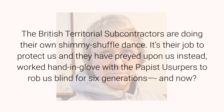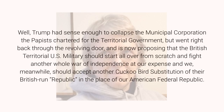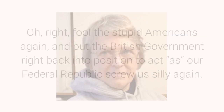So does the Queen and Westminster have a lot of explaining to do. The British territorial subcontractors are doing their own shimmy-shuffle dance. It's their job to protect us and they have preyed upon us instead, worked hand in glove with the papist usurpers to rob us blind for six generations. And now — well, Trump had sense enough to collapse the municipal corporation the papists chartered for the territorial government, but went right back through the revolving door and is now proposing that the British territorial U.S. military should start all over from scratch and fight another whole war of independence at our expense.